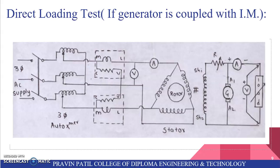Next is direct loading test, that is if generator is coupled with induction motor. So this is the circuit diagram for direct loading test. In this, you can see there are two wattmeters, one ammeter and voltmeter connected to stator side. And there is a motor generator set in which on generator side you can connect ammeter and voltmeter and one load is connected.